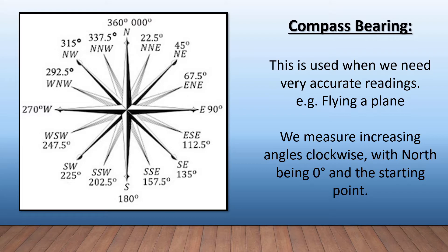We can't fly a plane and say well we're sort of heading in the right direction — no. We need accurate readings, and that's where they use compass bearings. We measure increasing angles clockwise with north being zero as our starting point, with the compass point labels included so you don't get confused with only the degrees.